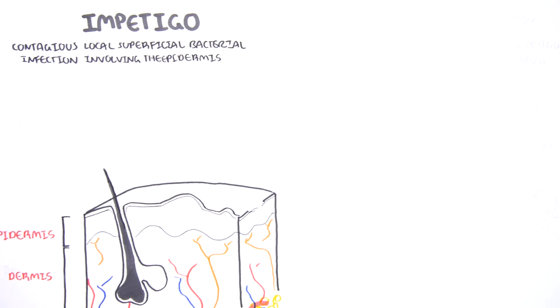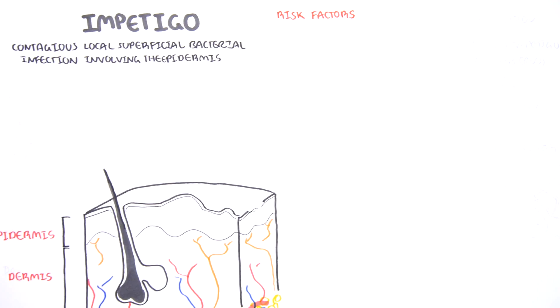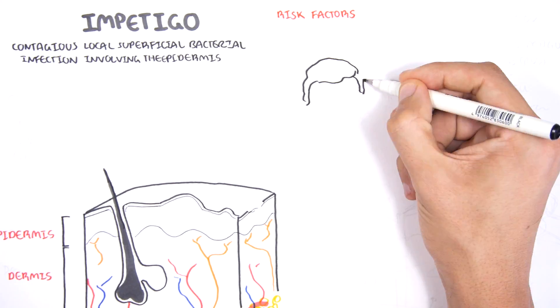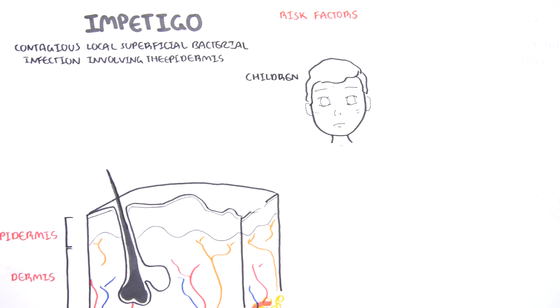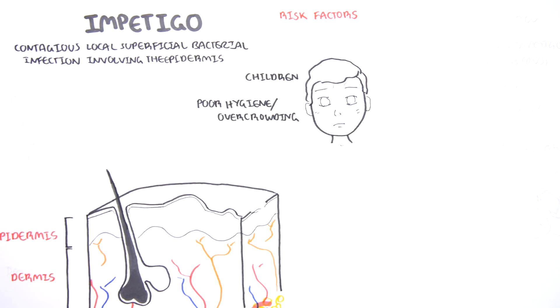Impetigo classically presents in children, and so the risk factors of impetigo include children. Because impetigo is contagious, risk factors include poor hygiene and overcrowding.